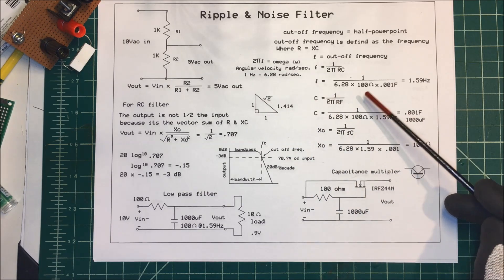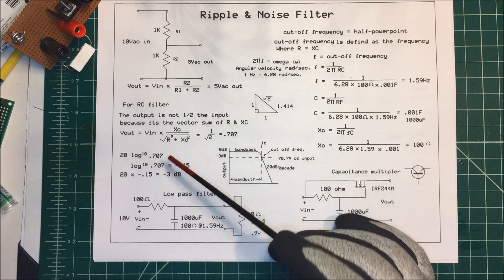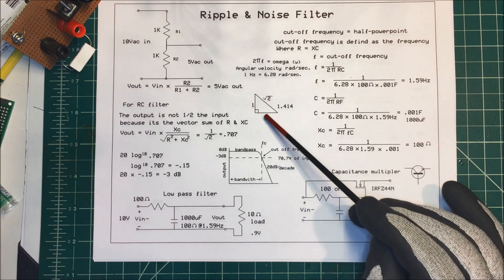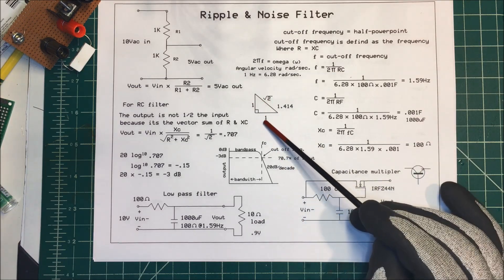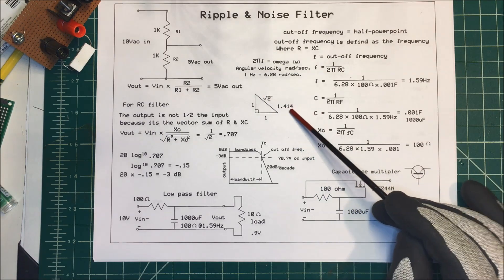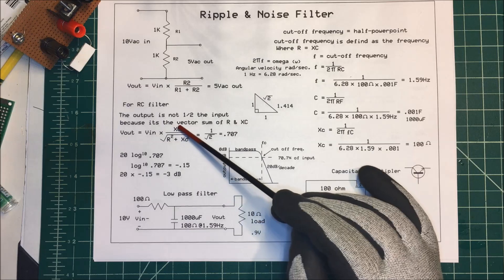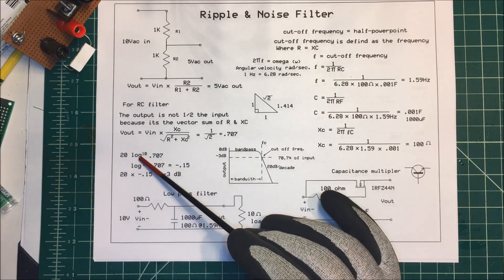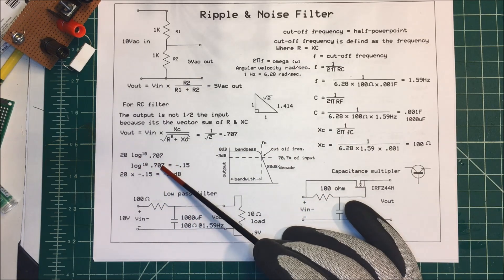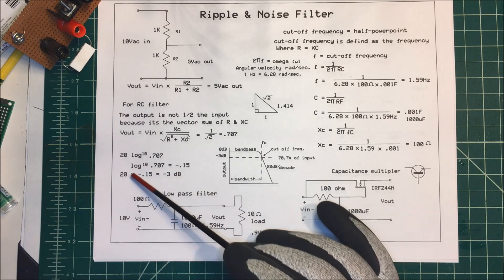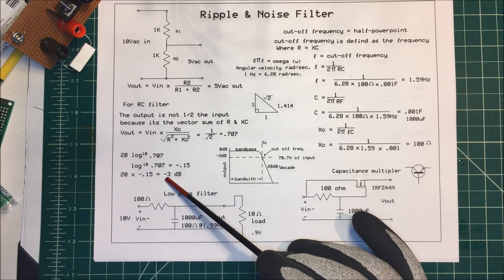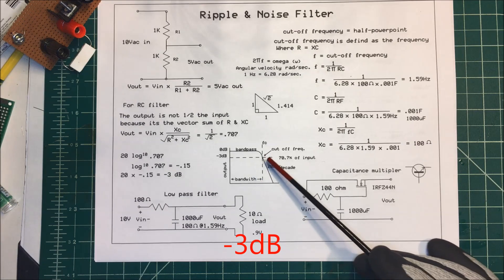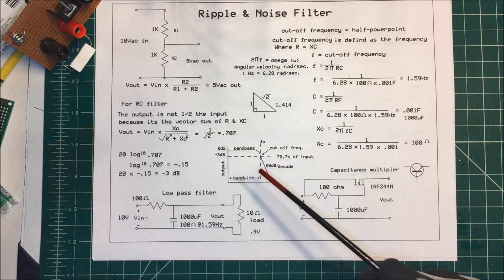So we use the Pythagorean theorem: it's the square root of R² plus XC². If both sides were 1, the hypotenuse would be the square root of 2, which is 1.414, and dividing 1 by 1.414 gives 0.707. To find decibels, we take 20 times log base 10 of 0.707: log base 10 of 0.707 is −0.15, and 20 times −0.15 comes out to −3 dB. So the cutoff frequency is at 3 dB down, which is about 70% of the input.